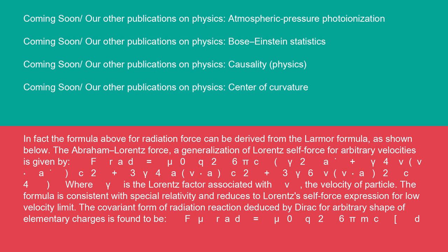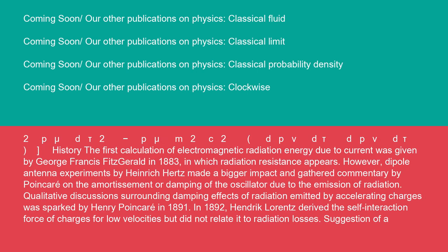The covariant form of radiation reaction deduced by Dirac for arbitrary shape of elementary charges is found to be F^μ_rad = (μ₀q²)/(6πmc)[d²p^μ/dτ² - (p^μ/m²c²)(dp^ν/dτ)(dp_ν/dτ)].